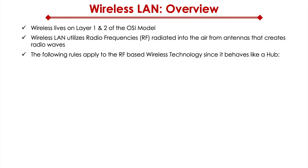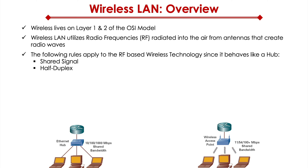One of the things about the wireless LAN is that it behaves like a hub. In a hub, we have what's called a shared signal, meaning everybody connected into the hub is sharing the same piece of wire. The communication is half duplex, meaning only one device can send data — it can only send or receive, not both at the same time. It can only transmit in one direction.